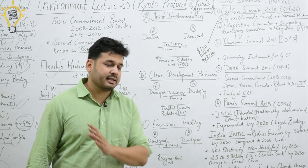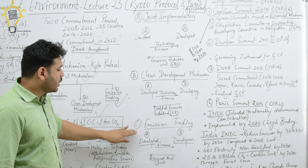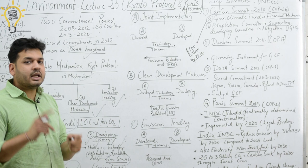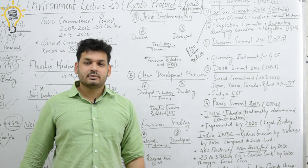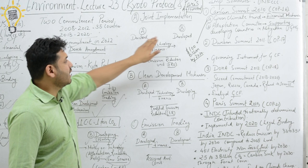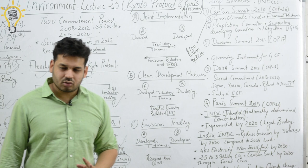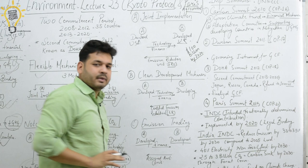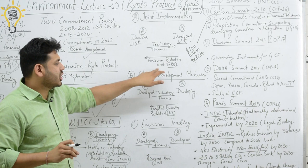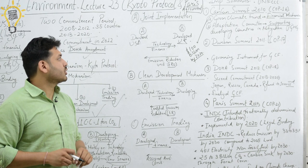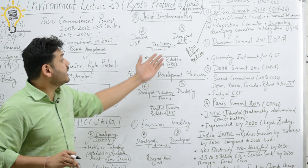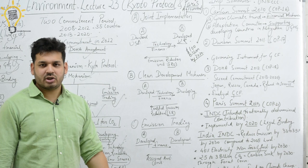The first mechanism is Joint Implementation — an agreement between two developed countries. For example, developed country A (USA) provides finance and technology to developed country B (UK), and in return receives Emission Reduction Units (ERUs), which are carbon credits. This is Joint Implementation: developed to developed.